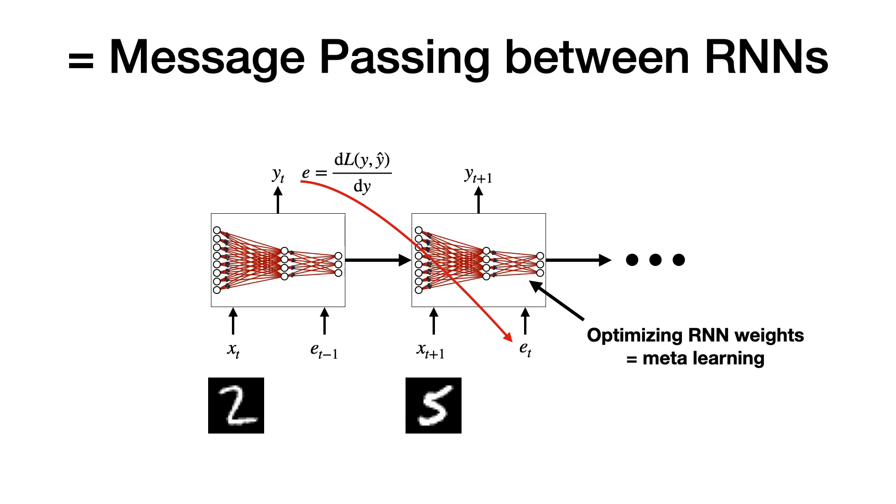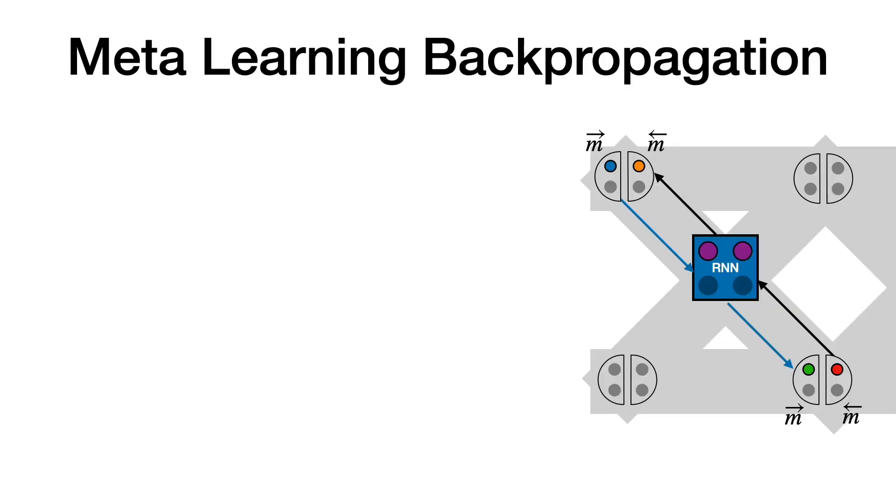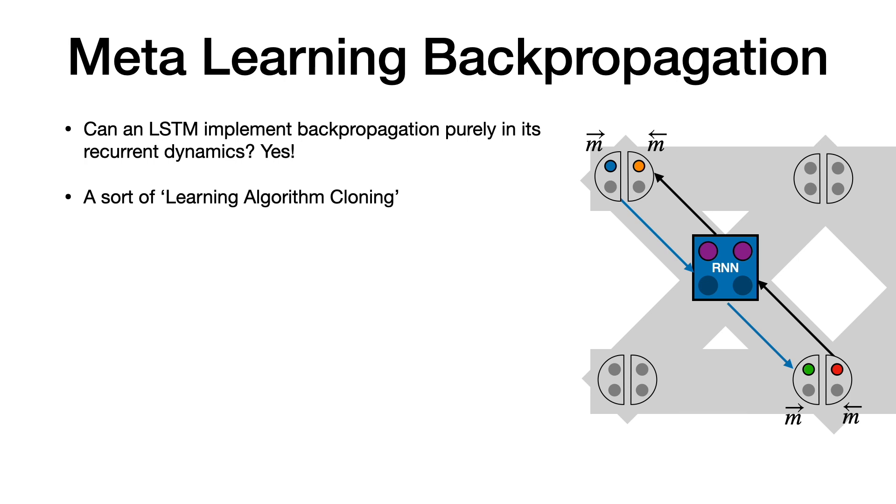Remember that this variable shared recurrent weight matrix in VSML corresponds to message passing between RNNs. So what can VSML meta-learn? Previously, we argued we don't want the fixed inductive bias of backpropagation in our system. But of course, a powerful meta-learner should be able to meta-learn an algorithm such as backpropagation. In fact, our LSTM can implement backpropagation purely in its recurrent dynamics. To demonstrate this for VSML, we perform a process we call learning algorithm cloning.